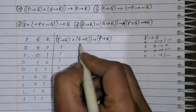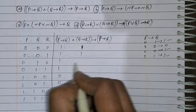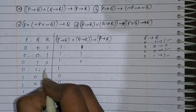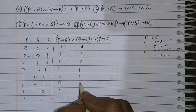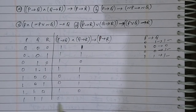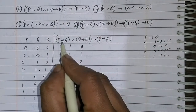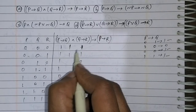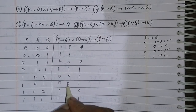It is true, true. Q implies R: true, true, true. This is false. This is true. If Q is false, then it will be true. It is false. It is true. And it is false. It is false. It is false. It is false.